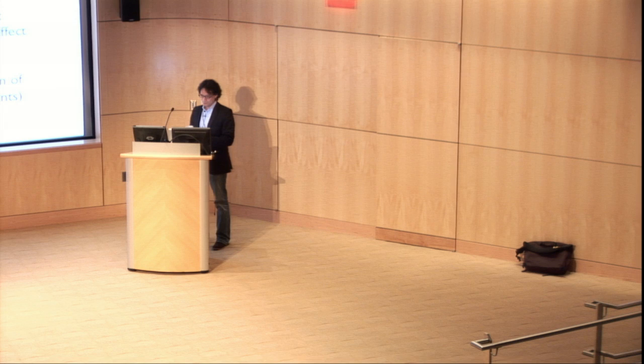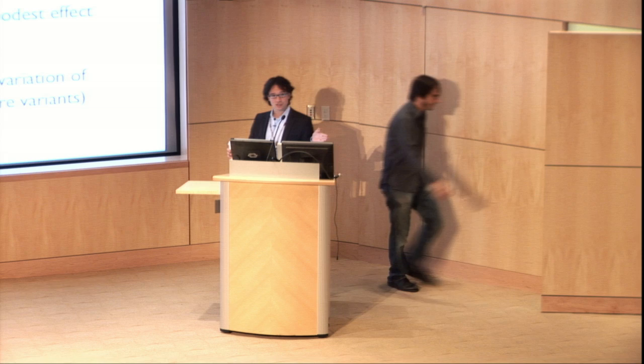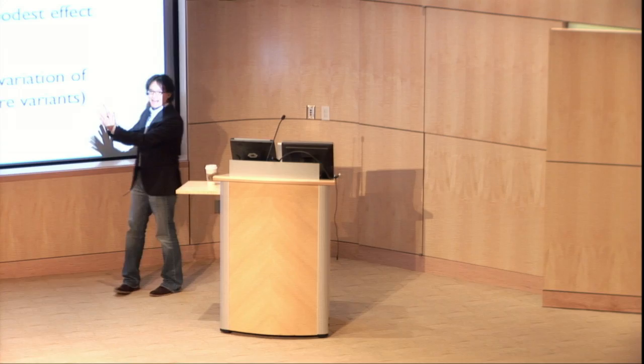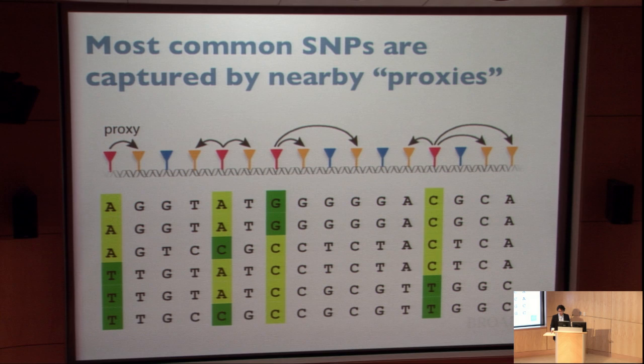The first caveat of GWAS as we've seen it for the past few years is a limitation of the HapMap resource: limited coverage of variation of low frequency, including rare variants. This is of course why we are so interested in sequencing technologies at larger and larger scale, because that will provide us a way to start asking questions about that slice of the allele frequency spectrum that GWAS was unable to address.